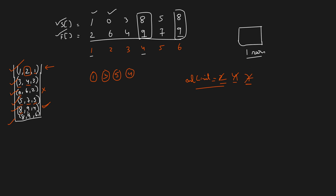The last meeting also has times 8 to 9. It starts at 8, but our last performed meeting ended at 9, so this meeting cannot be performed — skip it. After traversing all meetings in sorted order of finishing times, we get the maximum number of meetings that can be performed and their order. The key insight is: the sooner a meeting finishes, the more chances we have of performing additional meetings in that single room.